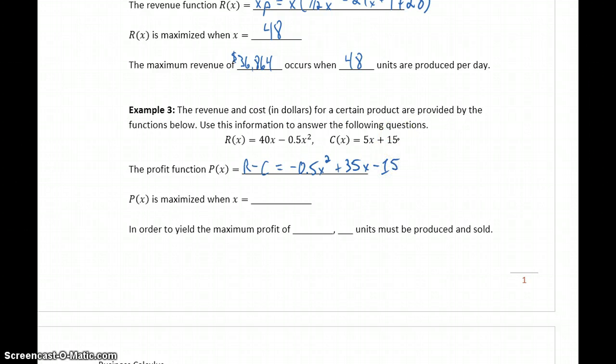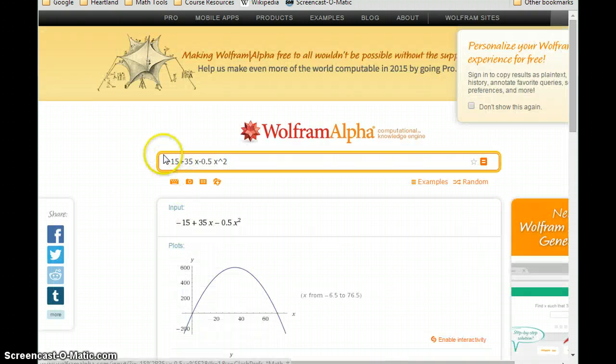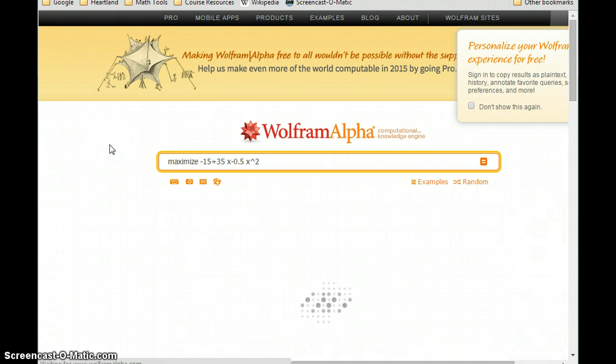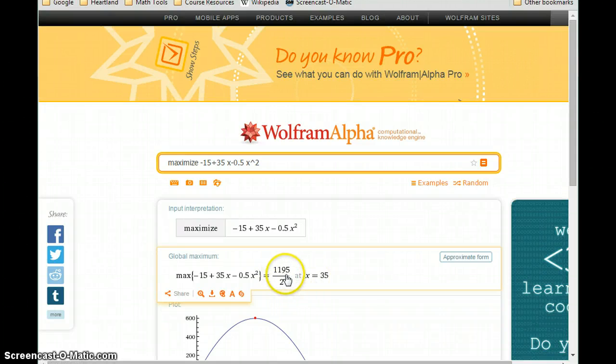And then, we want to find what value for x would maximize our profit function. So, we can click on that function. And then, ask Wolfram Alpha to maximize that function. We're not given any specific domain, so all we need to do is just maximize that profit function that we found. And in this case, we see that we get our maximum function value at x equals 35. And then, our maximum function value is 1,195 halves, which, on its own, isn't a very practical number to work with.